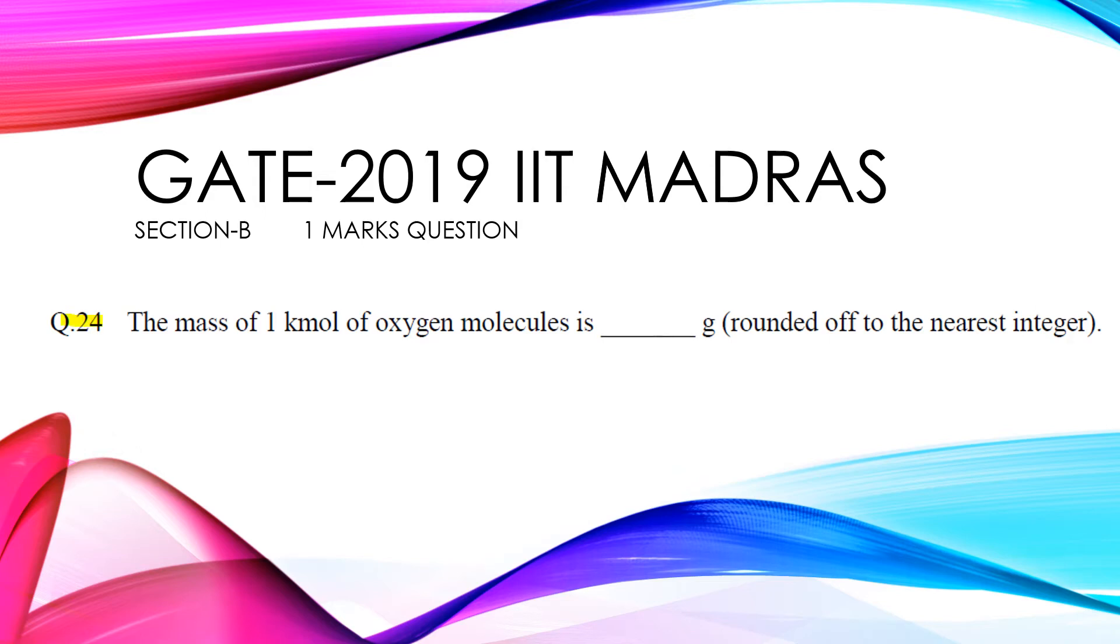Question number 24. The mass of 1 kilomol of oxygen molecule is ___ gram (rounded off to the nearest integer).